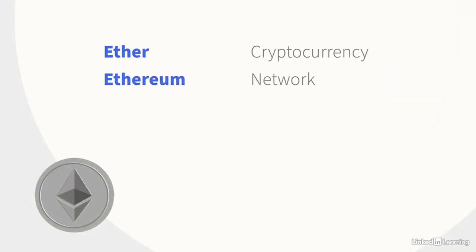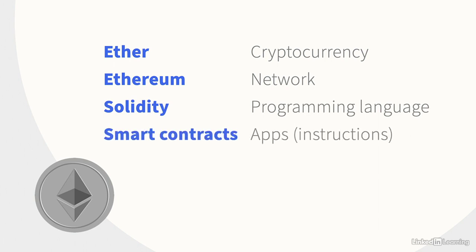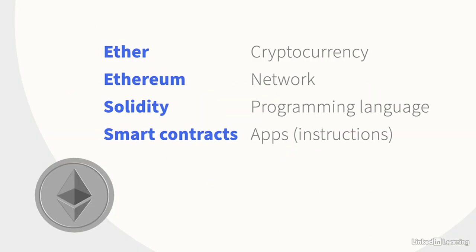The platform supports its own programming language called Solidity. In this language, code can be constructed, called a smart contract, that is executed under specific conditions. Think of it as similar to a legal contract that goes into effect and binds parties to certain requirements, expectations, and behaviors. In a smart contract, for example, payment could be triggered upon delivery of a physical product, and a back-end inventory system could be updated.